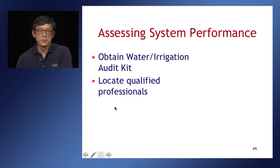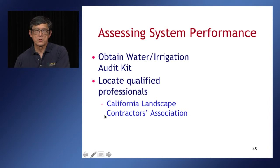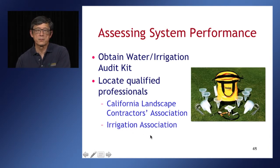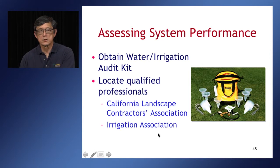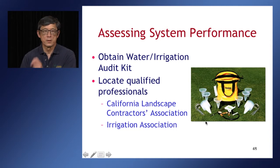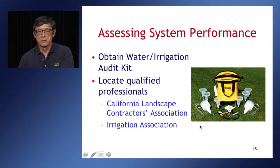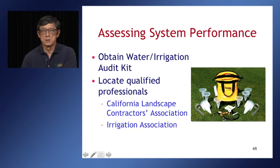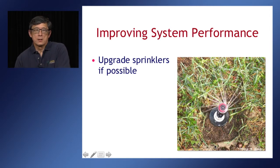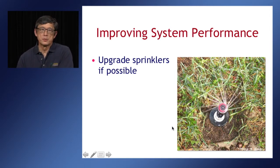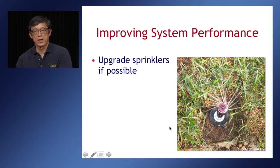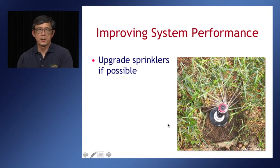We can locate qualified professionals — the California Landscape Contractors Association and the Irrigation Association both have certification programs for irrigation technicians and irrigation auditors. There are also kits available with catchment containers, pressure devices, and other tools to help do irrigation assessments. One of the easiest things we can do to improve system performance is, if we have older spray or impact sprinklers in home landscapes, upgrade them — put in rotary streams.